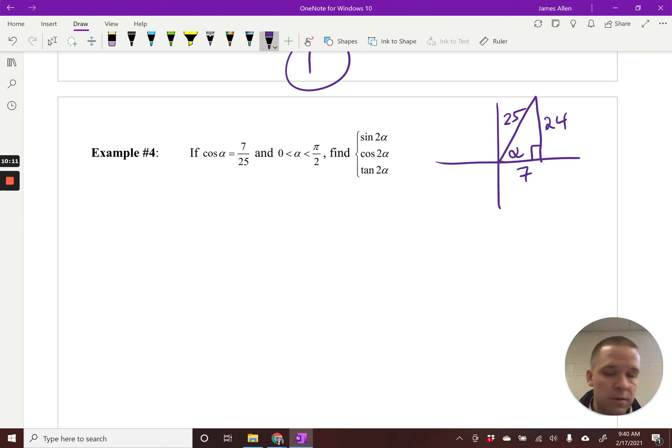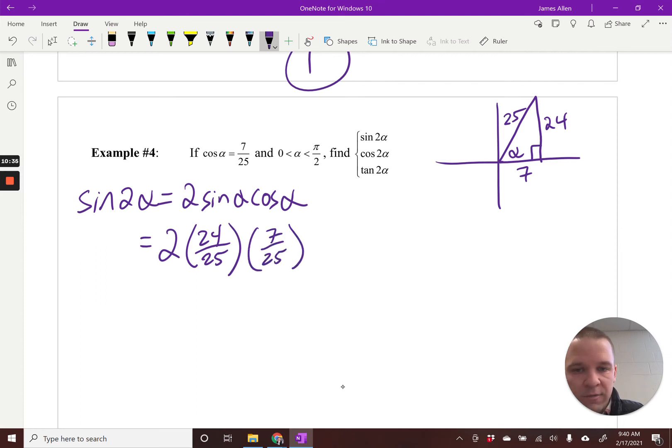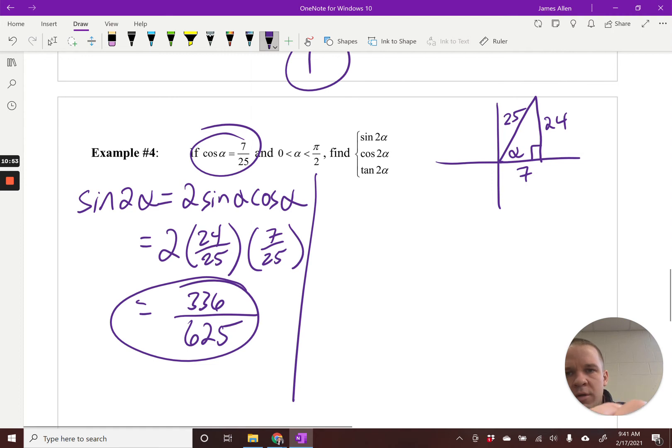So now for sine, you've got to remember our sine double angle formula. Sine of 2α equals 2 sine α cosine α. I find it helpful to write that down. Now all I need to do is put in, what's sine of α? That's 24/25. And what's cosine? That's 7/25. You could either get that from the triangle or the original problem. Now I've got to do some multiplication. That denominator is 625, and that numerator is 336. So I get 336/625.